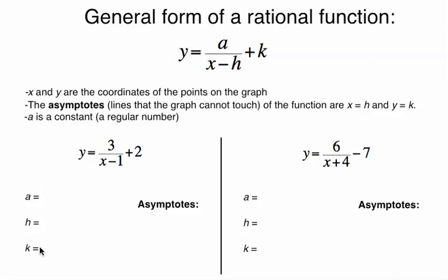In this particular form, you have y equal to some number, so remember a is a constant, divided by x minus h plus k. Again, a, h, and k are all going to be actual numbers or constants. If you look down here in the two examples, you see that you have a 3 where the a is, a 1 where the h is, a 2 where the k is, for example. So these are all going to be actual numbers here.